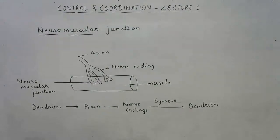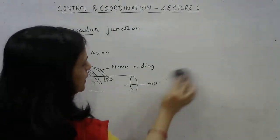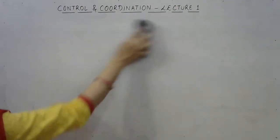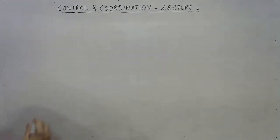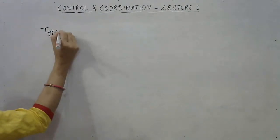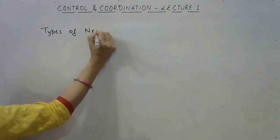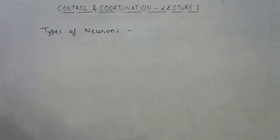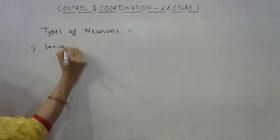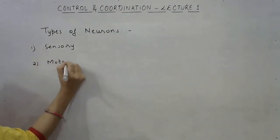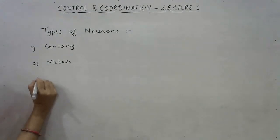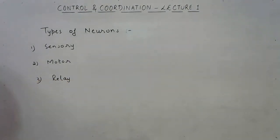Next topic: types of neurons. Neurons are of three types — sensory neurons, motor neurons, and relay neurons.